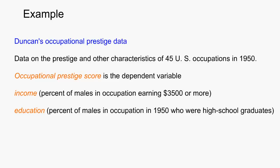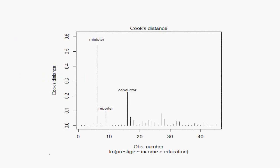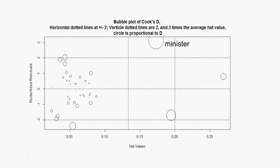Let's regress prestige on income and education and take a look at some of the plots of the influence measures. Here's Cook's D plotted over the observations. Remember, you may use any of the four cut-offs presented. The point 'Minister' sticks out. Another way to display Cook's D is a bubble plot, which is pretty neat. It shows how studentized residuals and the hat values — which are the leverage points — combine. The size of the circle is proportional to Cook's D, so you look to see if one circle is much larger than the others.